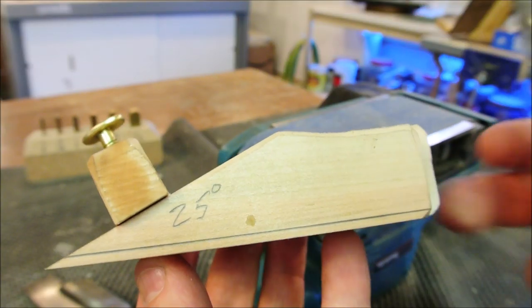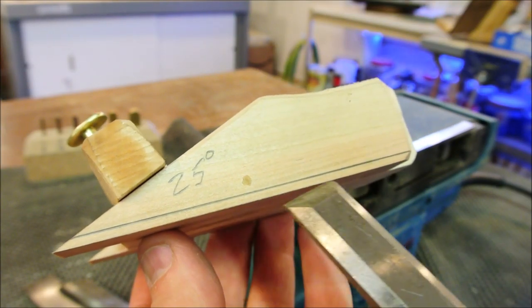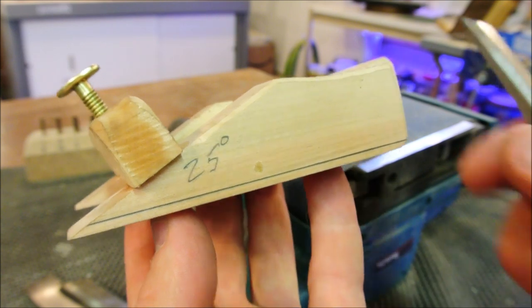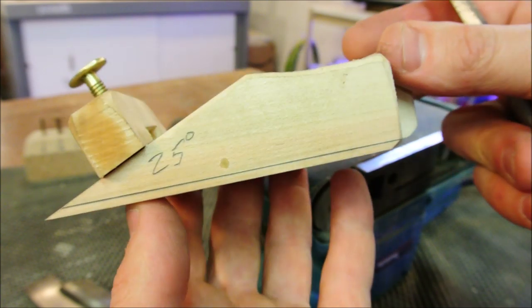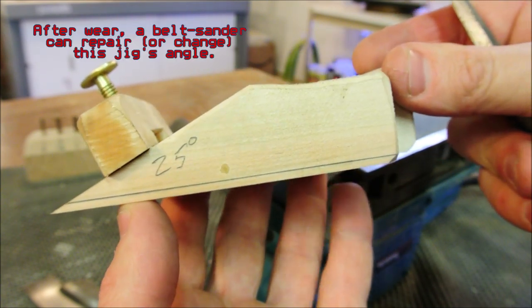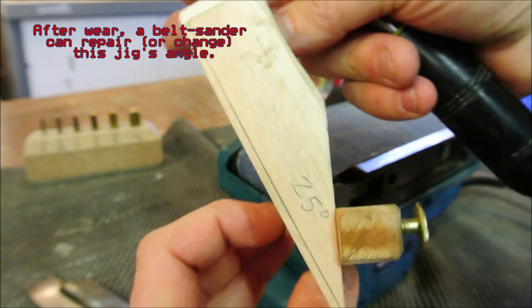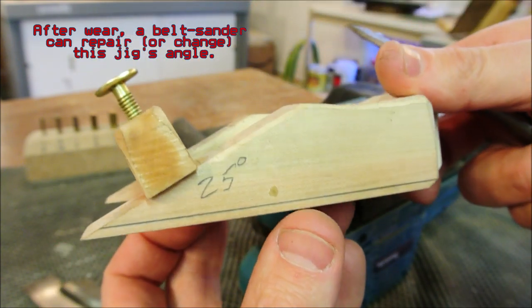A couple things to note. This indicator line was just made by setting the entire jig on a piece of glass and tracing a steel rule. And that way I can tell if the wood is getting consumed unevenly, because we want to preserve it at 25 degrees.